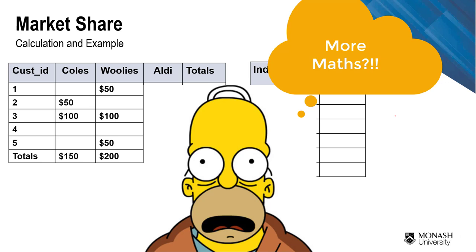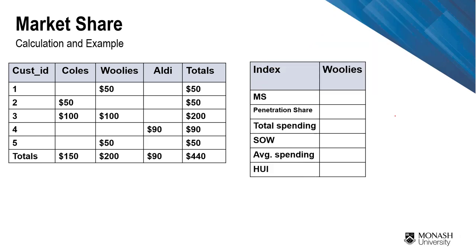At the end of the lecture, let's go through one more calculation example for Woolworths, using the same dataset. You can calculate for Coles, Woolworths, and Aldi, but in this case we'll just calculate for Woolworths. First, we want to calculate the market share for Woolworths. Market share is the total revenue — which is 200 — divided by the total spending in the market, which is 440.